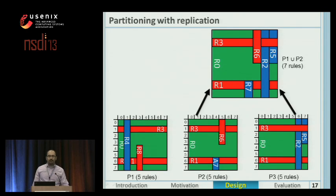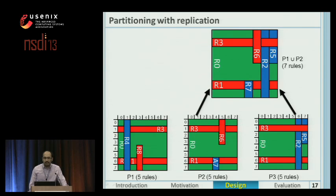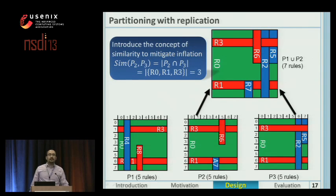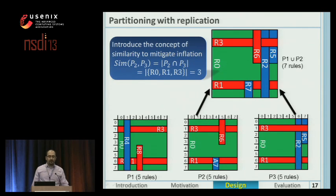For example, if we save partitions P2 and P3 on the same device, we only need to save the rules R0, R1, and R3 — and we only need to save them once. This introduces the concept of similarity between partitions that allows us to have small partitions by mitigating inflation. Here, the similarity of partitions P2 and P3 is three rules.